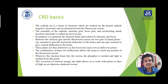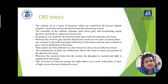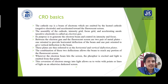The combination of these two deflections allows the beam to reach any portion of the fluorescent screen. Wherever the electron beam hits the screen, the phosphor is excited and light is emitted from that point. This conversion of electron energy into light allows writing with points or lines of light on an otherwise darkened screen.